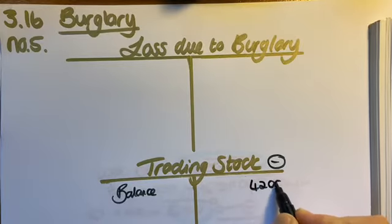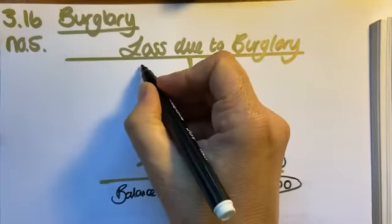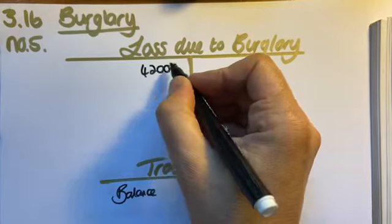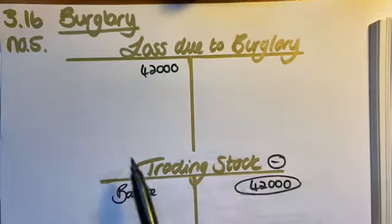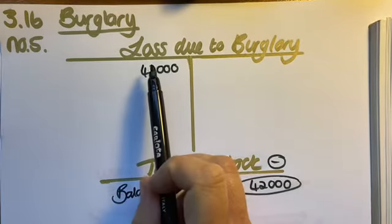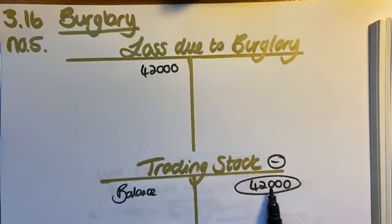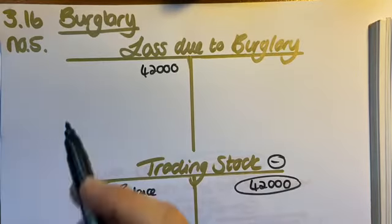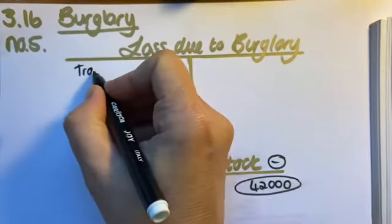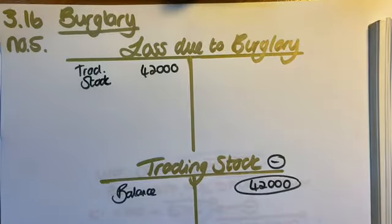So I'm going to put R42,000 on the right-hand side in trading stock, and that means in my 'loss due to burglary' account it goes on the left. The easiest way to know this is through your double entries — it tells you this is a credit. Before the R42,000 going in, I label it trading stock.